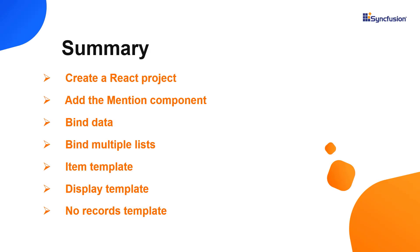In this video, I have shown you how to create and configure the Syncfusion React Mention component using the Create React App command and how to use a few of its basic features. You can download this working example from the GitHub link in the description below. I've also shared a link where you can learn about obtaining a free license key to use our React products if you're eligible for our community license. Thank you for watching this video. If you found it useful, please give it a like and subscribe to our channel.